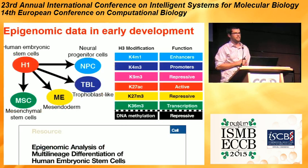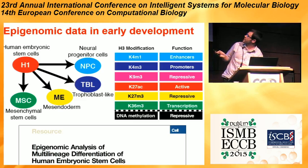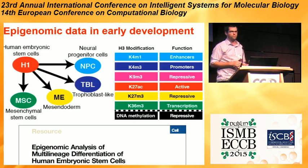To do this study, we used a dataset we published in Cell in 2013, which was part of the Roadmap Epigenomics project. It was produced at Bing Ren's Center, and it features H1 embryonic stem cells and four derived lineages. We have six different histone modifications, each representing different aspects of the epigenome and having different properties.